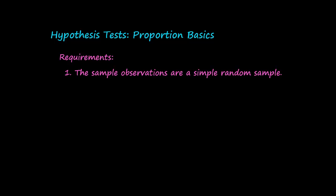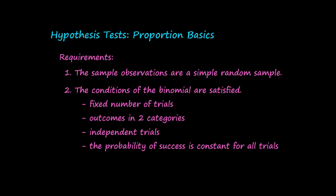First, the sample observations are a simple random sample. We've seen that requirement many times. The conditions of the binomial are satisfied. Recall that research involving proportions is a binomial distribution. Let's look at those conditions: fixed number of trials, outcomes in two categories, independent trials, and the probability of success is constant for all trials.